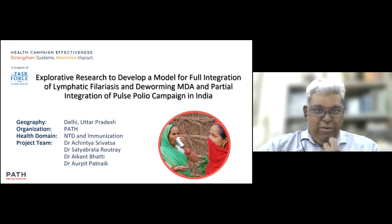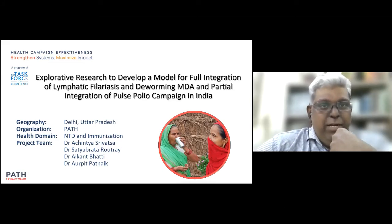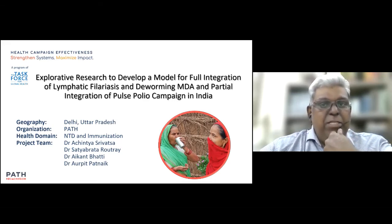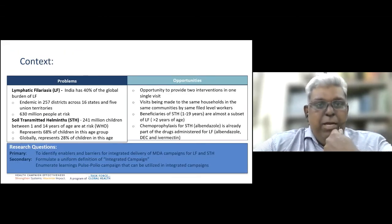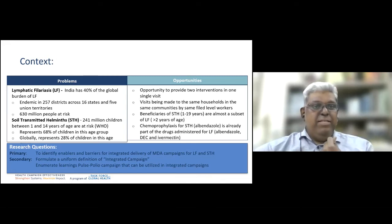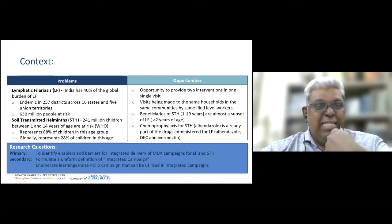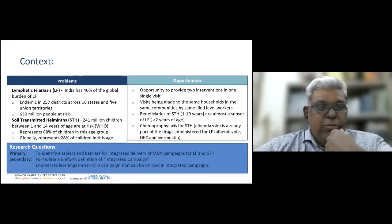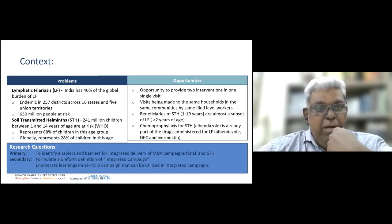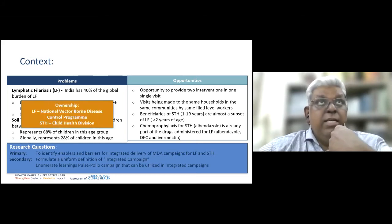Thank you Dr. Terry, and warm welcome to all. Our study was exploratory research to develop a model for potential full integration of lymphatic filariasis (LF) and deworming mass drug administration (MDA), and partial integration with pulse polio campaigns. LF is a major problem in India — about 40% of the global burden, with around 630 million people at risk across 257 districts in 16 states and 5 union territories endemic for LF.